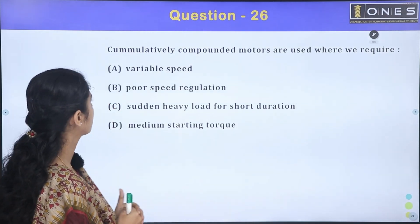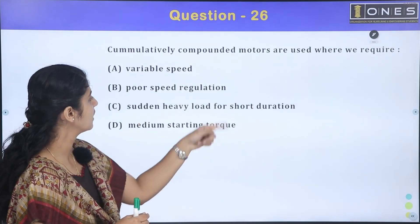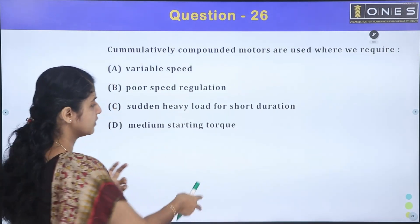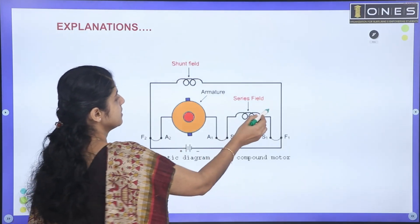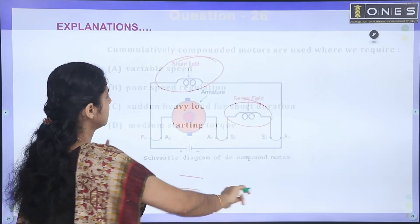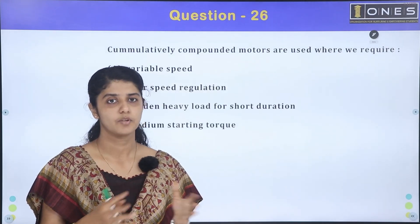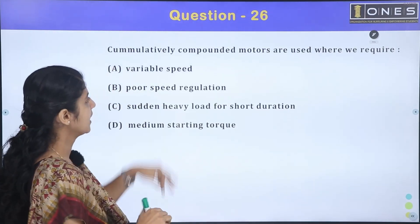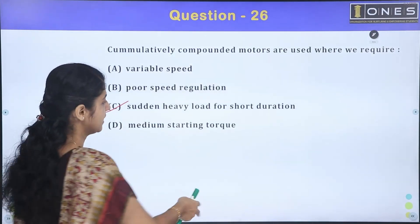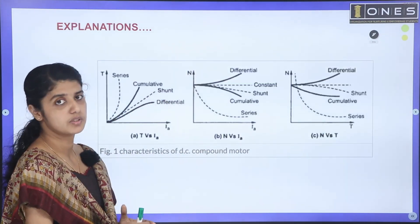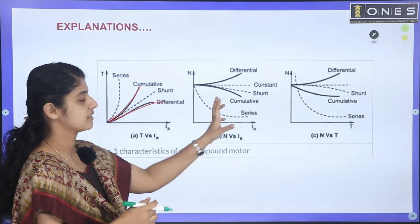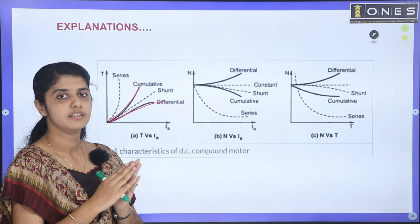Question 26: Cumulatively compounded motors are used where we require variable speed, poor speed regulation, sudden heavy load for short duration, or medium starting torque. A cumulatively compounded motor has both series field and shunt field — it is a compound motor. The flux from these two fields aids each other. The answer is sudden heavy load for short duration. The characteristics are in between series and shunt motors.